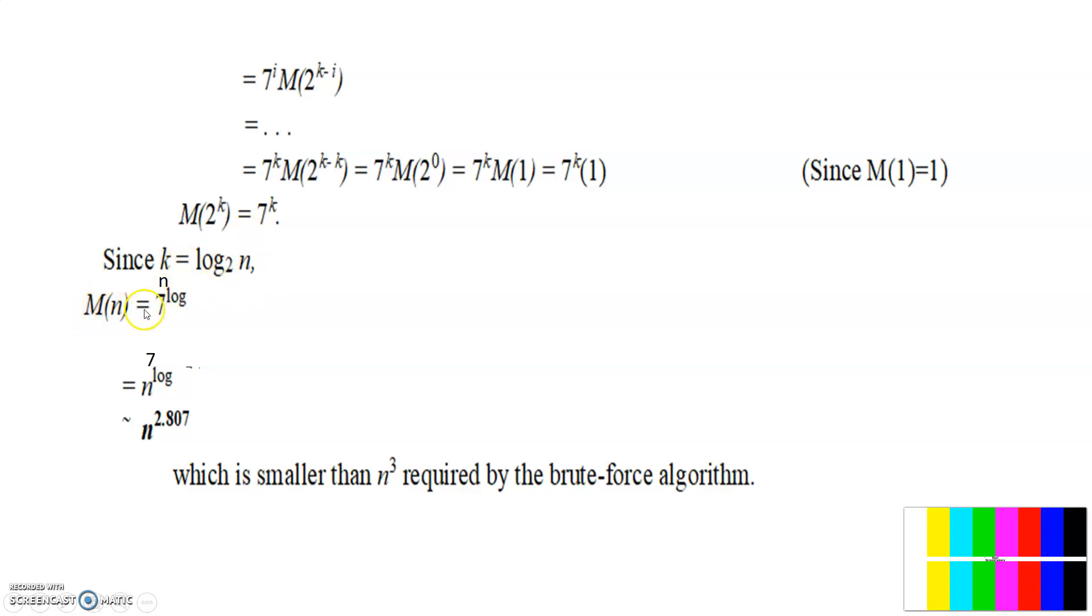So now M equal to 7 to the power of k value is what? It is log N here. So now if I take this one in this way, then I will get 7 to the power of log base 2 of N here.